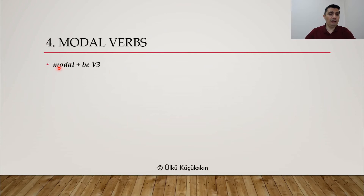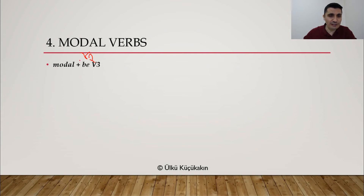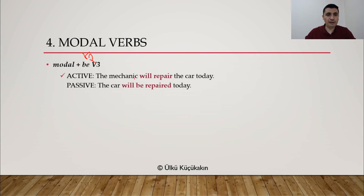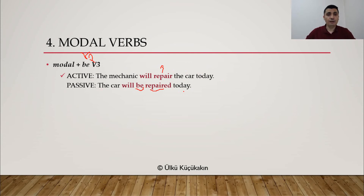Modal verbs always follow the pattern MODAL + BE + verb 3. Why? Because modals need verb 1 — the base form. So BE is in the form of verb 1, then verb 3 because this is passive. Normally you would say 'The mechanic will repair the car today' — active. In passive: 'The car will be repaired today.' BE is verb 1, and REPAIRED is verb 3.